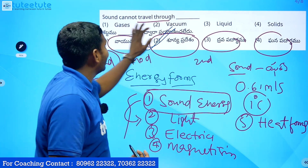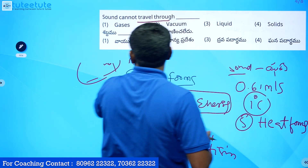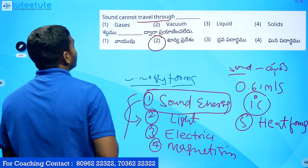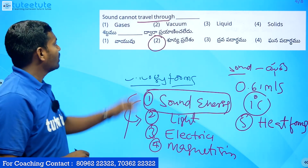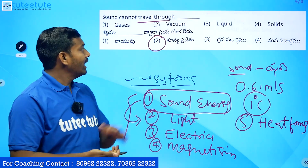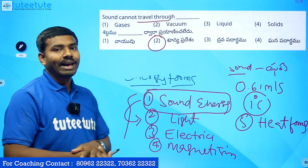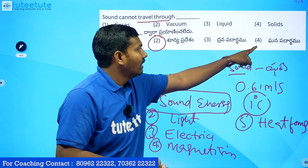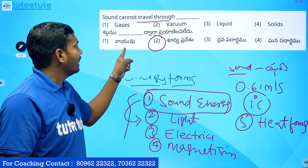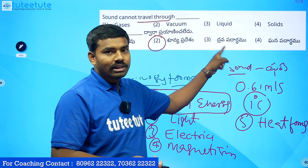So what is the answer? Sound cannot travel through — vacuum. The speed of sound is highest in solids, then liquids, and lowest in gases. Sound cannot travel through vacuum. It's an easy question.